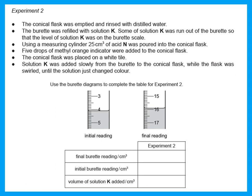In experiment two, the conical flask was emptied and rinsed with distilled water. The burette was refilled with solution K, and 25 cm³ of acid N was measured using a measuring cylinder into the conical flask with five drops of methyl orange. The burette readings were 15.9 and 4.1, giving a difference of 11.8 cm³.